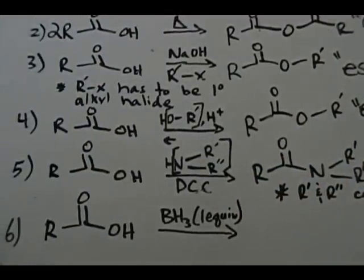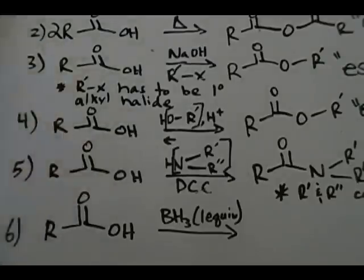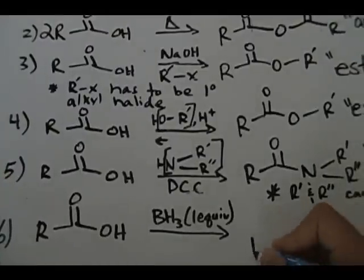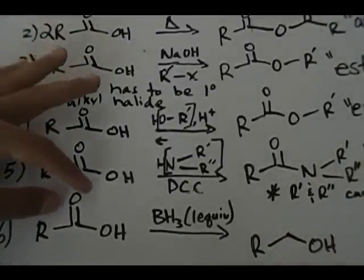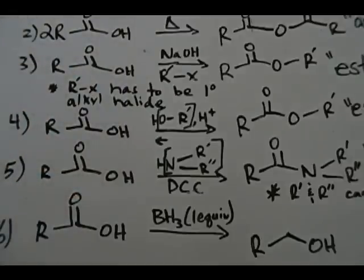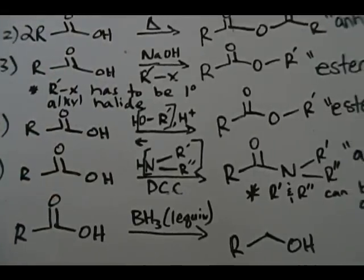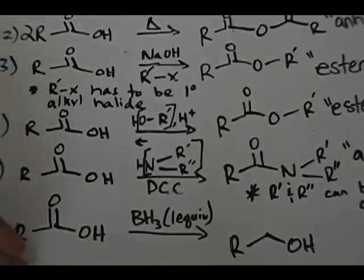The final reaction: a carboxylic acid with borane, BH₃, one equivalent. All you do to draw the product is erase the double-bonded oxygen. This is a reduction — anytime you get rid of a carbonyl it's a form of reduction. You go from the carboxylic acid to an alcohol, and that's it.